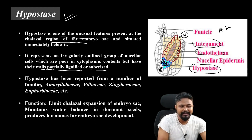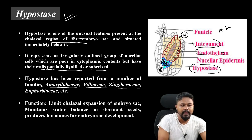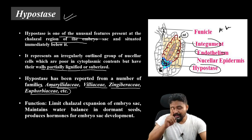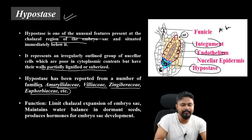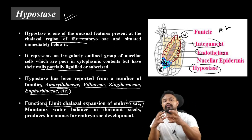The hypostase has been reported from a number of families like Amaryllidaceae, Liliaceae, Zingiberaceae, and Euphorbiaceae. It consists of cells that are poor in cytoplasmic content but have their walls partially lignified or suberized.